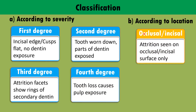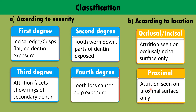According to location, there is occlusal and incisal attrition, where attrition is seen on the occlusal and incisal surfaces only. Then proximal attrition, where attrition is seen on the proximal surfaces only.